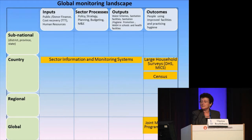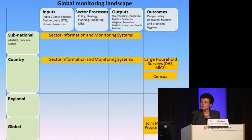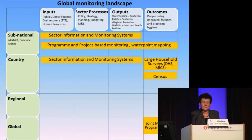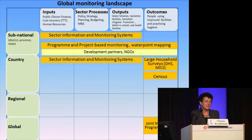But what about the rest of this grid — what else is out there besides what goes into the JMP and the sector information and monitoring systems at country level? In some countries we have sector information and monitoring systems at sub-national level, but these have to be quite big countries to have sub-national governments capable of putting this together. And in most countries we have program and project-based monitoring, such as water point mapping, usually done by development partners and NGOs. One of the problems here is that this may be excellent, high-quality monitoring, but it's highly localized to project or program areas and is not always done in partnership with local government.